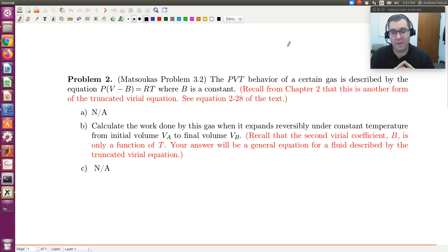Let's take a look at our second example problem from chapter 3. The PVT behavior of a certain gas is described by the equation P times V minus B equals R times T, where B is a constant.